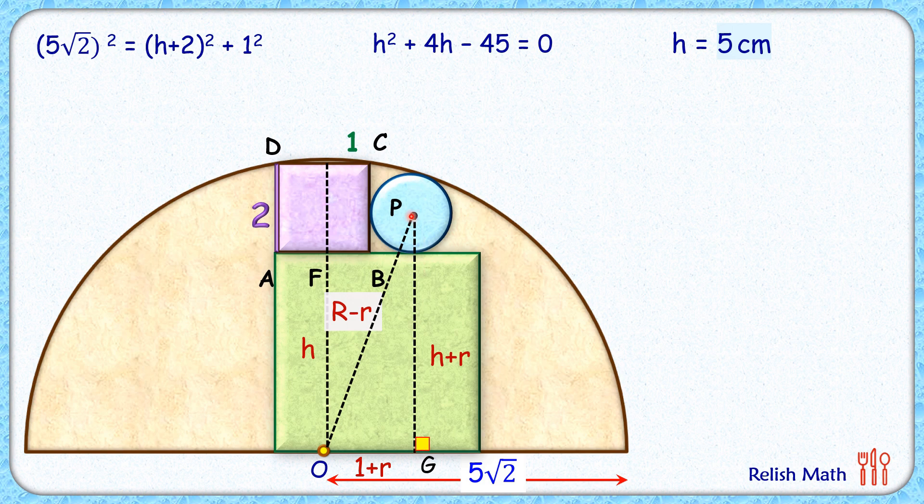Now in this right angle triangle POG, applying Pythagoras theorem we will get hypotenuse squared, which is (5√2 - r)² equals (h + r)². Since h is 5, this equals (5 + r)² + (1 + r)².